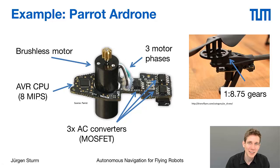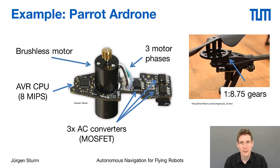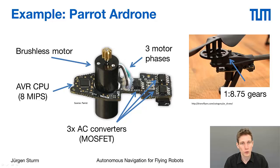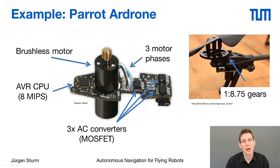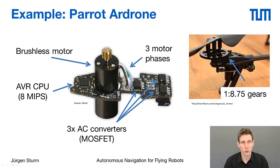As a concrete example, taken from the Parrot AR Drone — though similar constructions can be found on other quadrotors — this is the motor board of the AR Drone. It consists of the brushless motor on the inside with three cables coming out for the three motor phases. These phases are driven by AC converters, which are the three chips on the right. There is a small AVR CPU microcontroller that generates the PWM signal for the AC converters. On the AR Drone, the motor does not drive the propeller directly but has a small gear in between, whereas other quadrotors directly drive the propellers, depending on the speed and power of the motor.